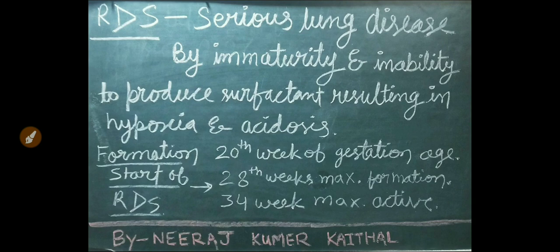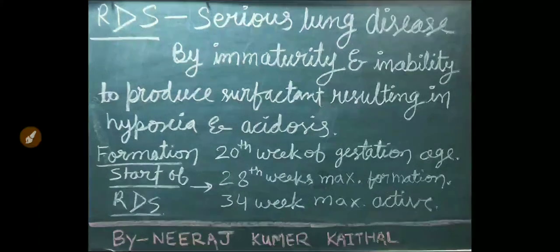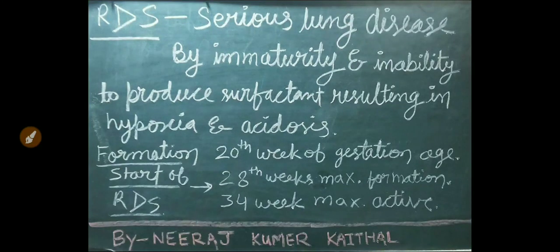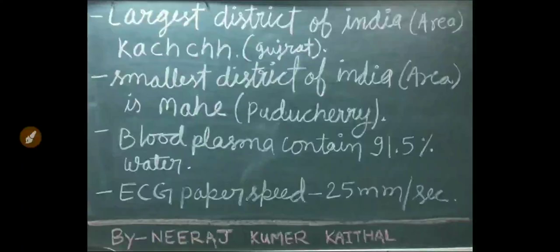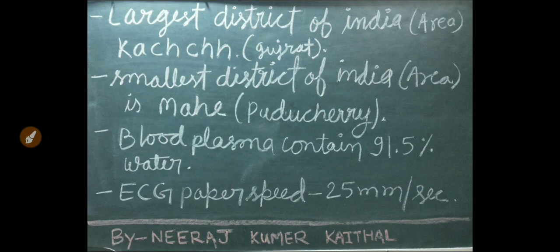Respiratory distress syndrome is a serious lung disease caused by immaturity and inability to produce surfactant, resulting in hypoxia and acidosis. Formation of RDS starts at 20 weeks of gestational age, is maximum at 28 weeks, and most active at 34 weeks.